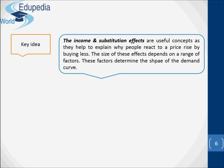The income and substitution effects are useful concepts as they help to explain why people react to a price rise by buying less. The size of these effects depends on a range of factors, which determine the shape of the demand curve. A word of warning: be careful about the meaning of the words 'quantity demanded.' They refer to the amount that consumers are willing and able to purchase at a given price over a given period — for example, a week, a month, or a year. They do not refer to what people would simply like to consume. You might like to own a luxury yacht, but your demand for luxury yachts will almost certainly be zero at the current price.